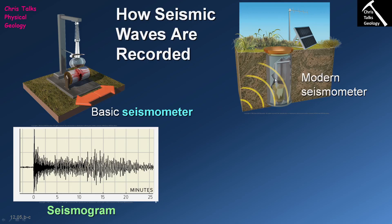Modern seismometers are more advanced — they are buried in the ground, have a power supply, and a radio antenna to relay data to a central location. They work more like a piston: as the wave passes through, it causes a piston inside to rise and fall, which gets converted into a seismogram. Both basic and modern seismometers produce seismograms, which we use to determine that an earthquake has occurred, where it occurred, and how strong it was.